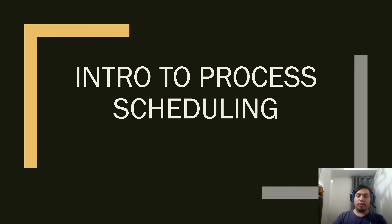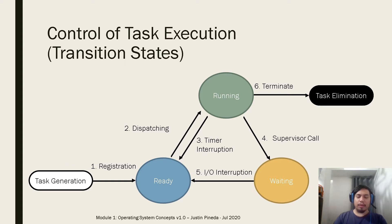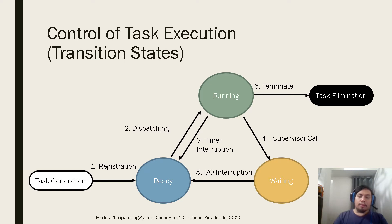Let's go to Introduction to Process Scheduling — just a review. There are three transition states for task execution. When a process is generated, it's registered and sent to the ready queue in the ready state. Once dispatched, it will run, and either there will be a preemption or an I/O operation or interruption. It will go back to the ready queue and be dispatched again until the process is finished and terminated. Remember these states — they will be used in our study of the different process scheduling algorithms.